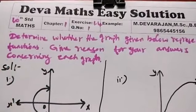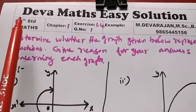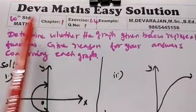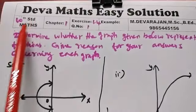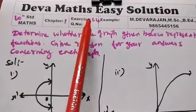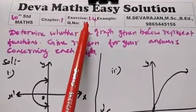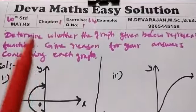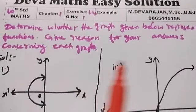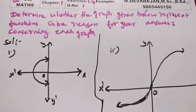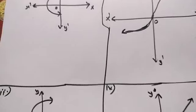Hi students, this is Deva from DevaMass E-Solution. Today I am going to teach you Tensor Max chapter 1, section 1.4, line. Question number 1. We have 4 graphs to do the graph function.